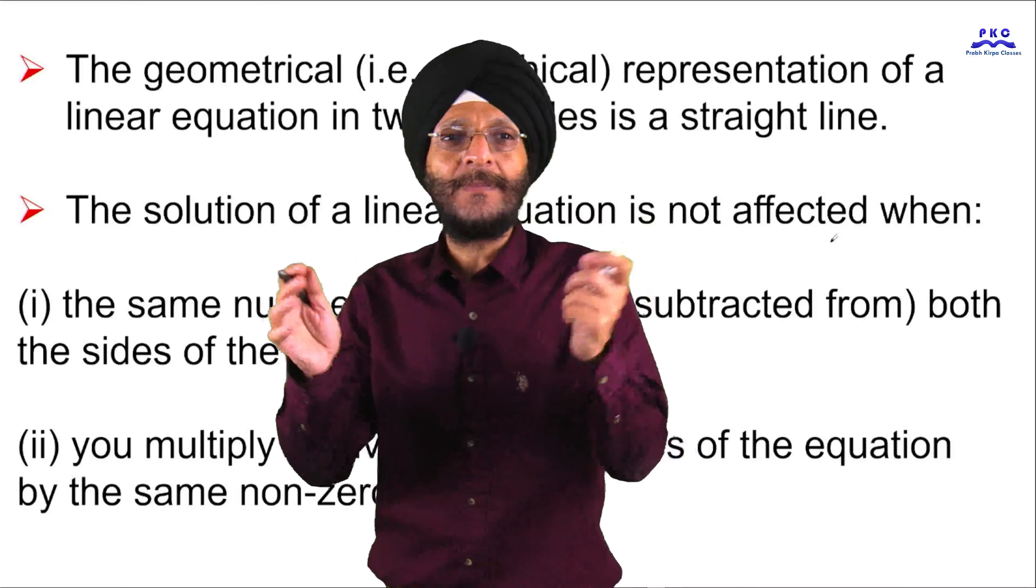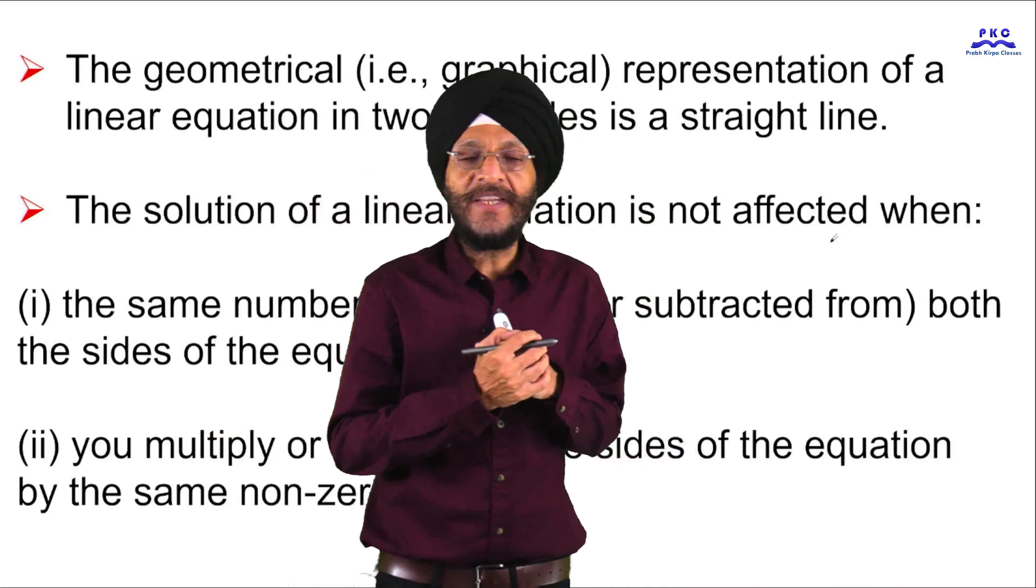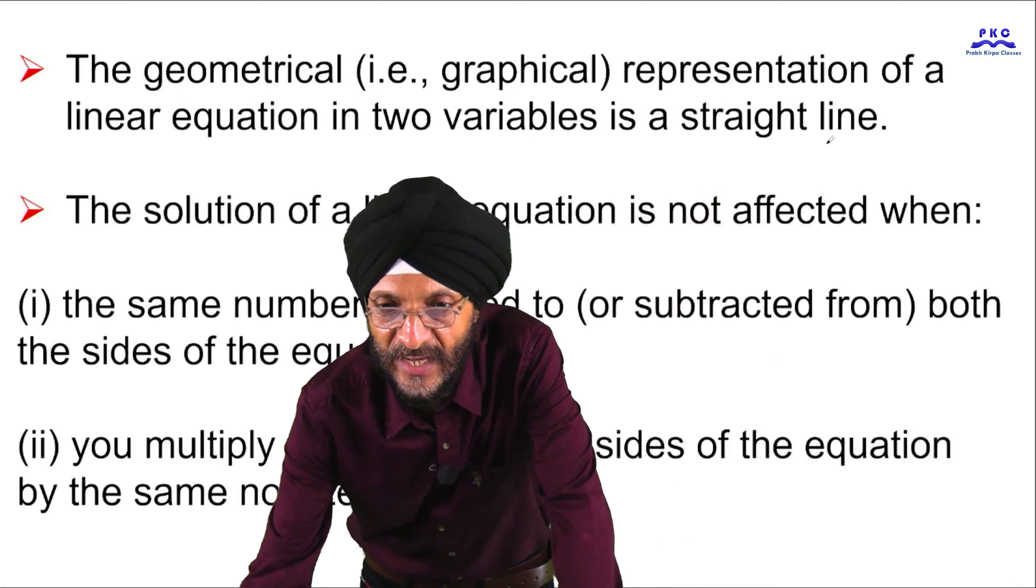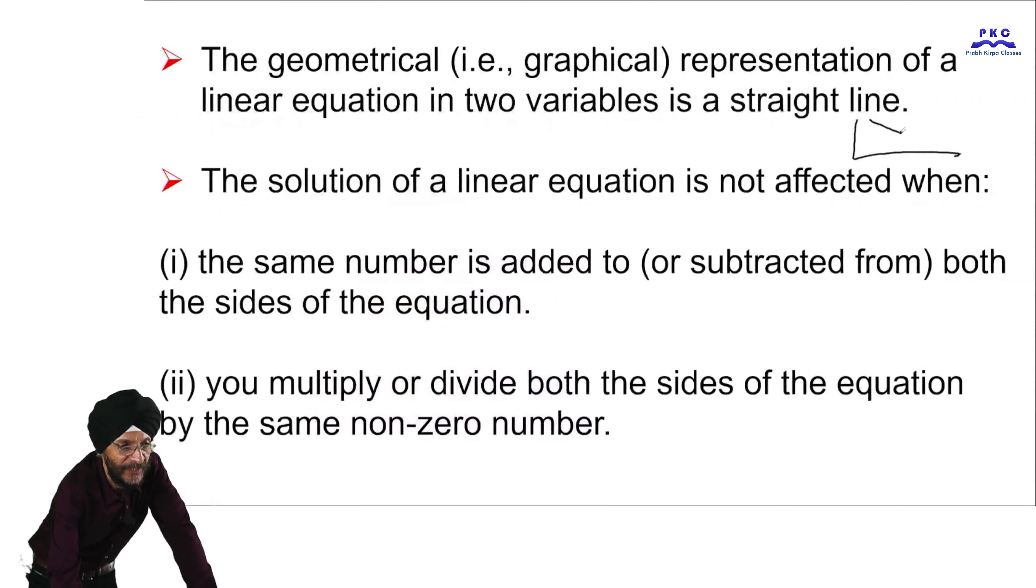The geometrical representation of a linear equation in 2 variables is a straight line. That is, the equation can be in this form straight line or it can be in this way or it can be in this way or it can be in this way.